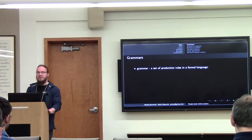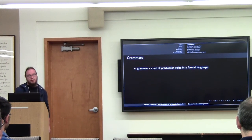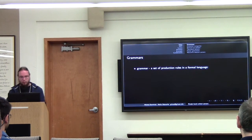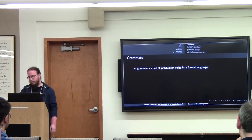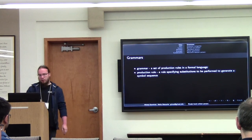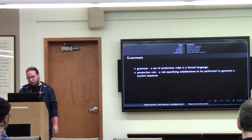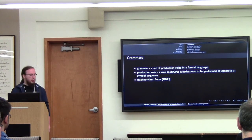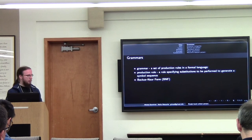So, what is a grammar? A grammar is a set of rules in a formal language that tells us how to interpret a string of characters or any other tokens. A production rule is something that specifies a substitution for a rule, and I'm going to use a slightly custom version of BNF for this presentation.